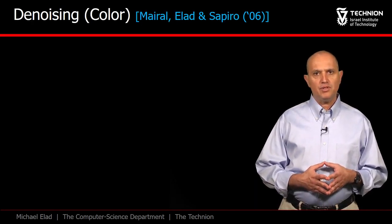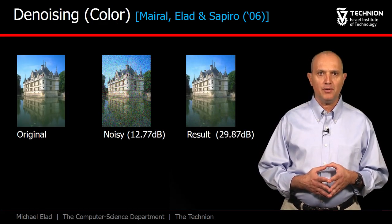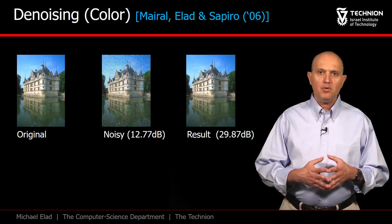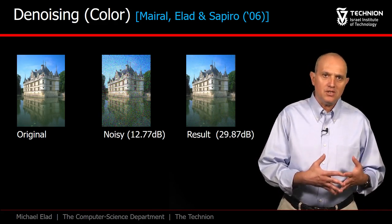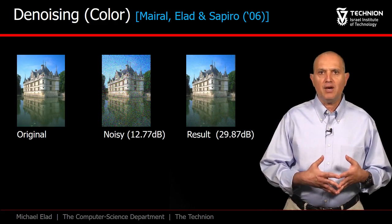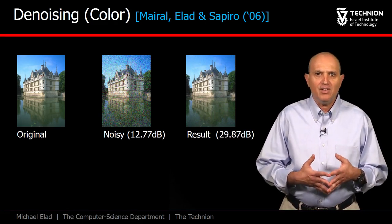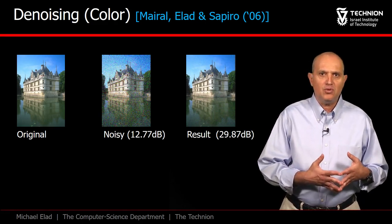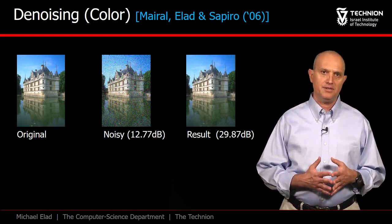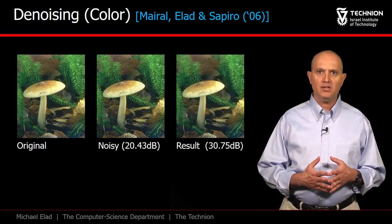While the previous result referred to black and white images, a follow-up work with Guillermo Sapiro and Julian Meiral treated color images. The beauty in this work is the fact that color has been absorbed by the dictionary of the model, relieving us from the need to define the relation between the color layers. The results obtained are superb.